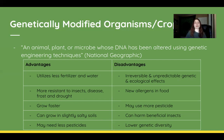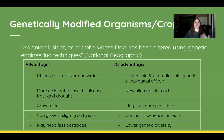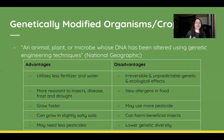Another advantage is that GMOs may need fewer pesticides. There's something called the pesticide treadmill — a continuing cycle where you develop pesticides to kill pests, but one or two pests aren't affected, reproduce, and natural selection occurs. Using fewer pesticides helps break that cycle.